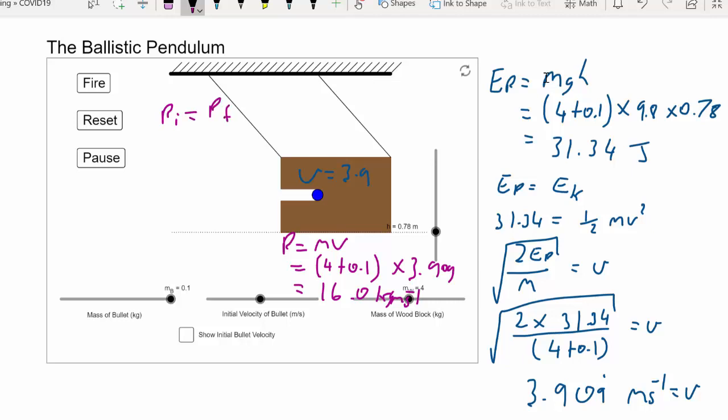And if we assume there's no external forces, then I can assume the momentum before is going to be momentum after. And so I know the mass of the bullet before, so I know it's going to be 0.1 times the velocity is going to be equal to the momentum after. So velocity is 16 divided by 0.1, which gives me 160.3 meters per second.